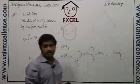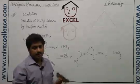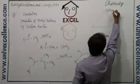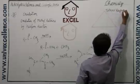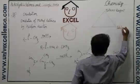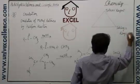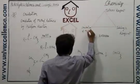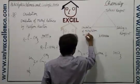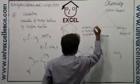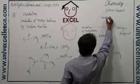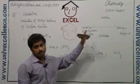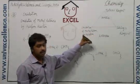The oxidation reactions of aldehydes and ketones in the presence of mild oxidizing agents can be classified into generally three types. One is by Tollens' reagent, another one is by Fehling's reagent, and the third one is the oxidation of methyl ketone by the haloform reaction.